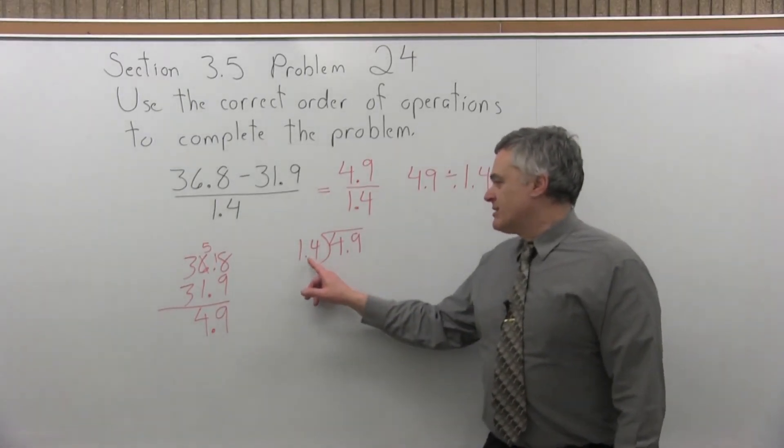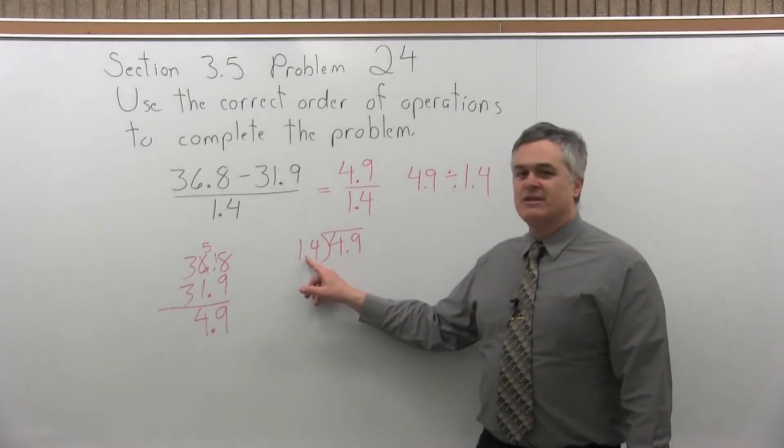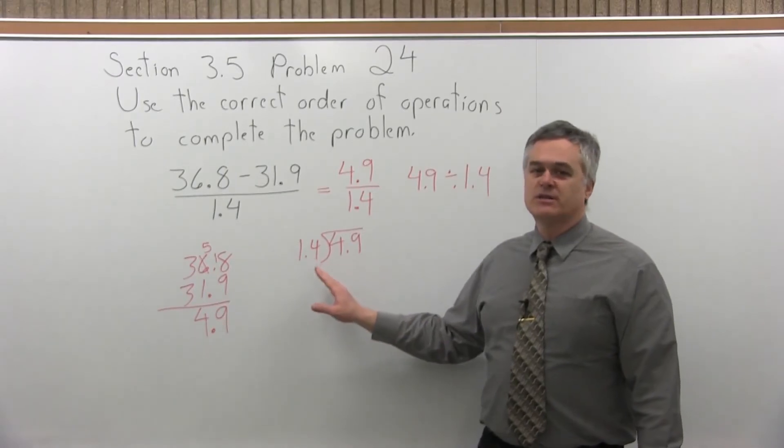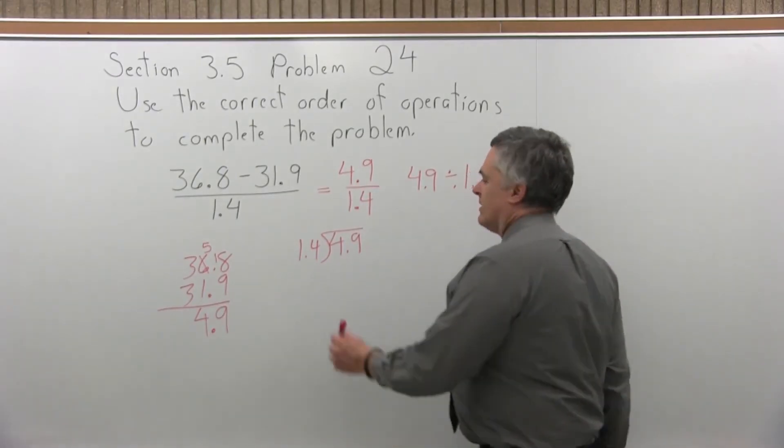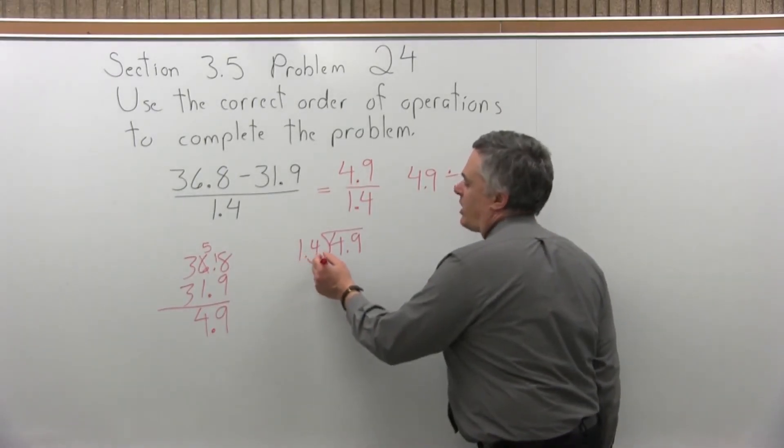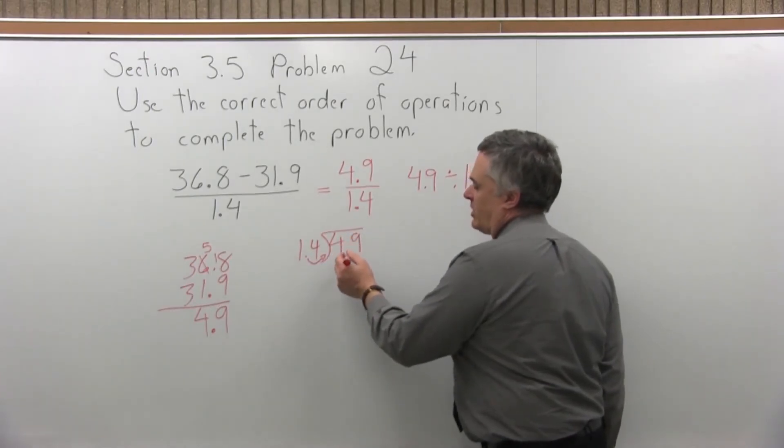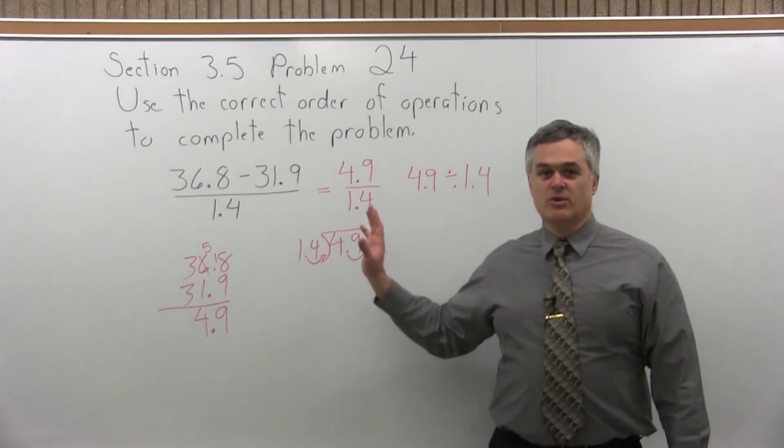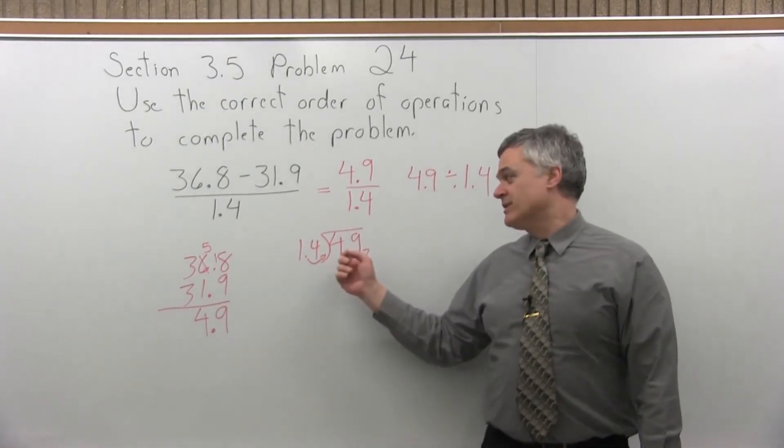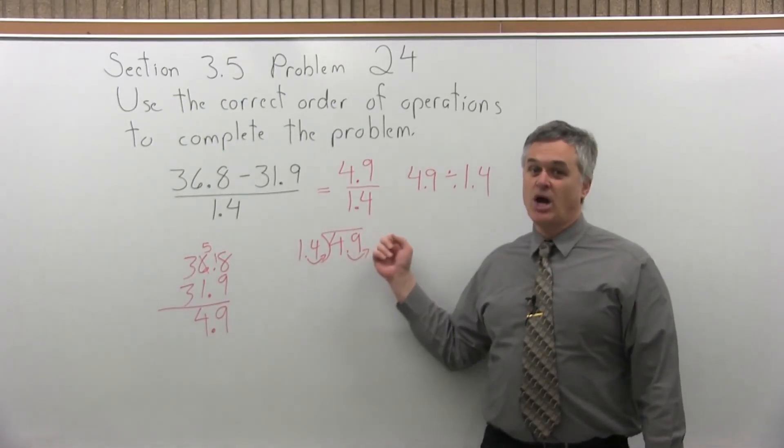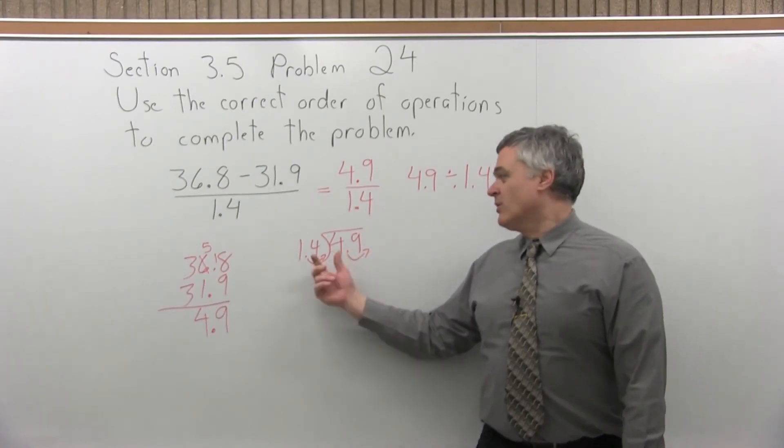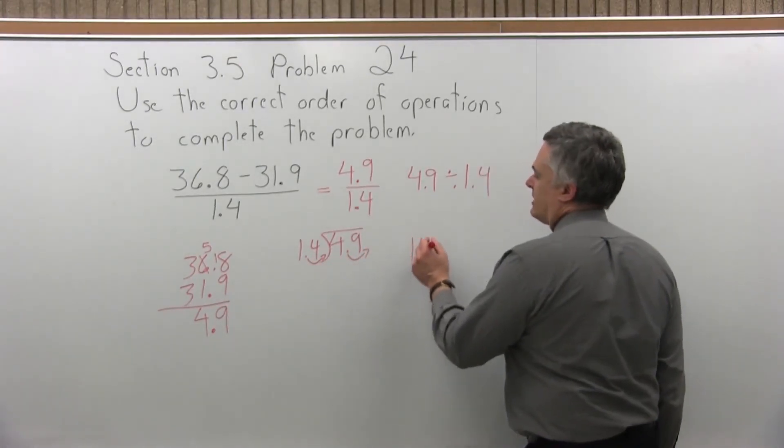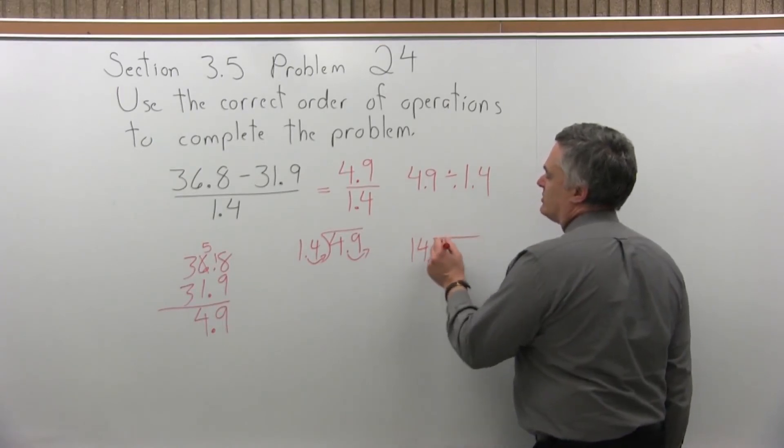Now, to start this division, I can't have the decimal between the 1 and the 4 in the 1.4. I have to move it as far to the right as it'll go, which means moving it one spot to the right. However many positions I move it for the number in front of the division symbol, I have to move it the same number of positions for the number under the division symbol. So, one spot for both. So the problem now really is written 14 divides into 49.